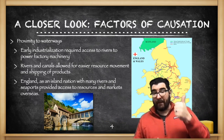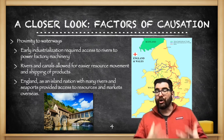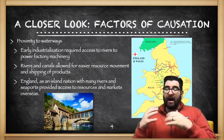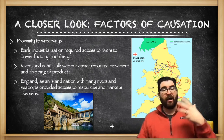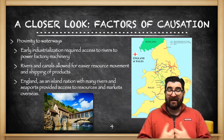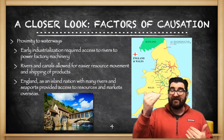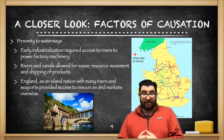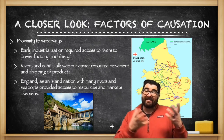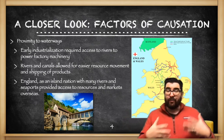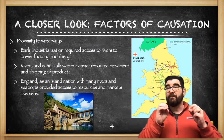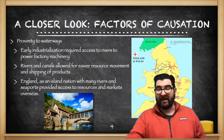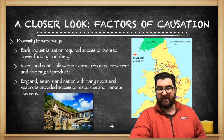In England, they've got proximity to waterways. Early industrialization requires access to rivers to power factory machinery. Rivers and canals in England will also allow for easier resource movement and the shipping of products after production. England also, as an island nation with many rivers and seaports, provides access to resources from distant and overseas markets.